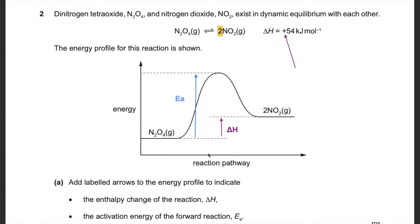Now, the activation energy of the forward reaction is the energy needed to start the reaction — it gets the ball rolling. The arrow faces upwards because you're gaining energy in order for the reaction to occur. It starts from the bottom and goes all the way to the top. You have to reach that peak in order for the full reaction to go through.